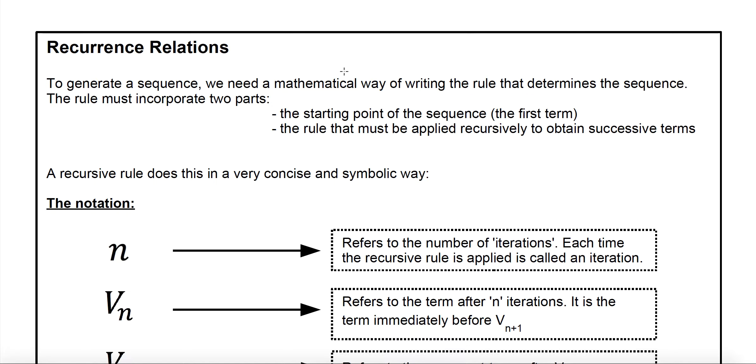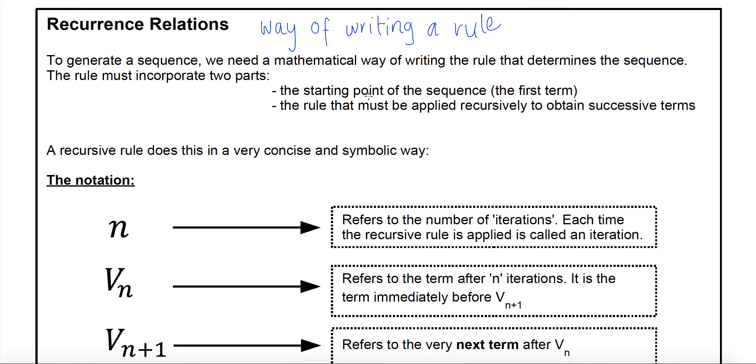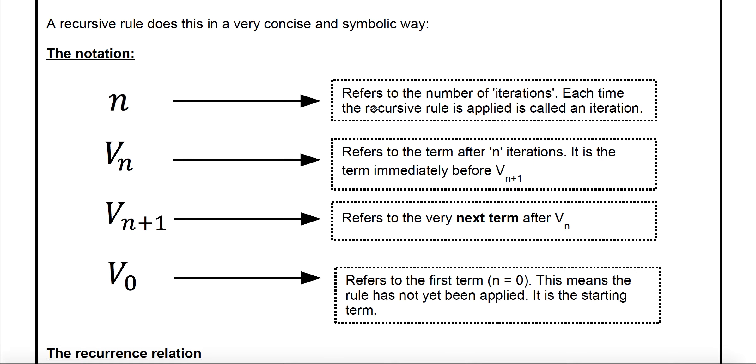Just move on to these things which are called recurrence relations. So sequences themselves are fairly straightforward. We know we have a rule for those sequences, but a recurrence relation is just a way of writing a rule. When you first come across them they can look a bit nasty in terms of lots of different symbols. I'm going to run through what those symbols mean. It's really about learning the language of a recurrence relation. It's a way of writing a rule. When we determine a sequence it's really important that we know the starting point of that sequence, so we need to know the very first term. The recurrence relation is going to show us that. The second thing that it shows is what is the rule that you're applying.